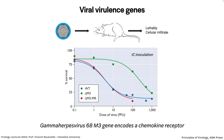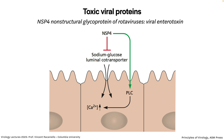Some viruses encode toxins. Rotavirus, which causes vomiting and diarrhea for a few days, makes a toxin called NSP4. It's produced in infected cells in the gut tract and inhibits a sodium-glucose luminal co-transporter — a membrane transporter important for keeping fluid balance in the intestines. The result of inhibiting that is diarrhea: fluid flows out and is not retained. NSP4 also increases intracellular calcium, which leads to further release of water from cells and diarrhea.